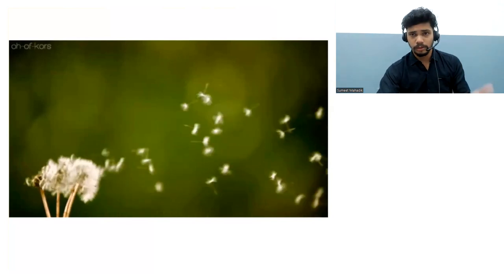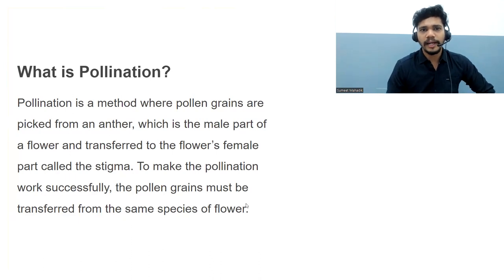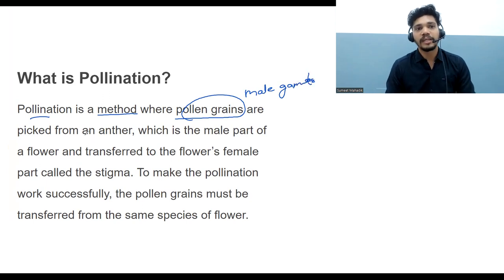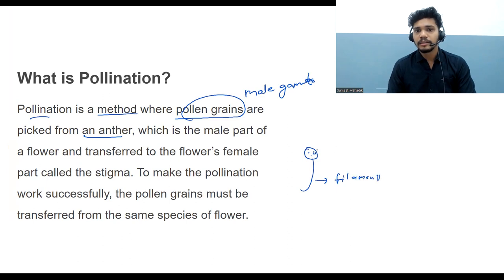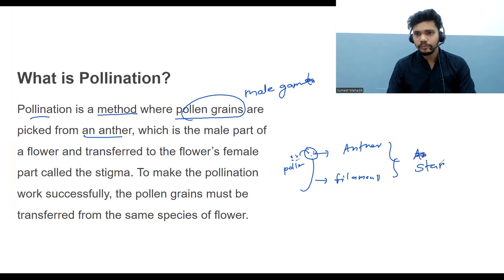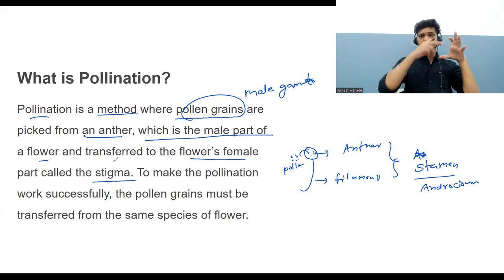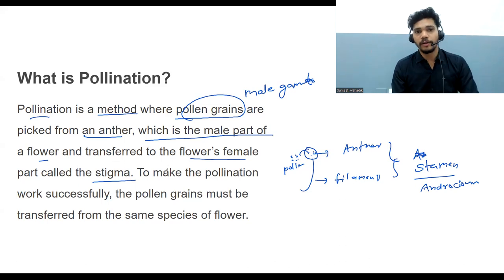Pollination is a method where pollen grains are picked from the anther — the filament and anther together are called the androecium or stamen, which is the male part of the flower — and transferred to the flower's female part called the stigma. So pollen must transfer from the anther to the stigma for pollination to work successfully.